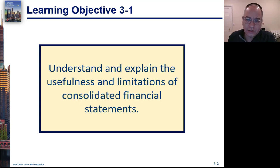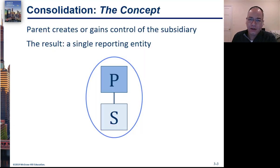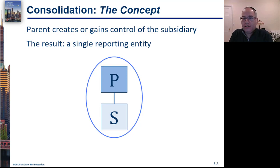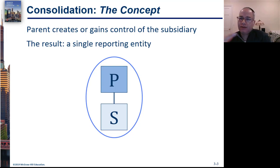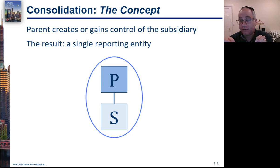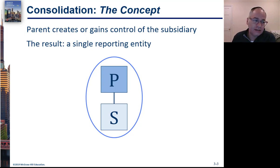Learning Objective 3-1 is to understand and explain the usefulness and limitations of consolidated financial statements. The basic idea is that the parent acquires a subsidiary or creates a subsidiary which it owns. In substance, this is really one company — the parent controls the subsidiary — so there should be one reporting entity and one set of financial statements as if it is one company. That's a great thing, but it also has some problems.